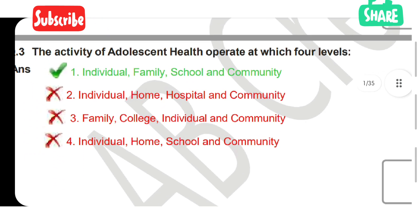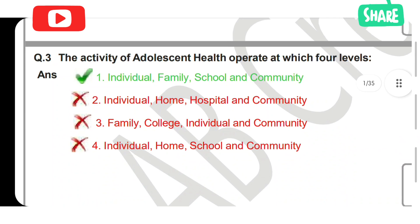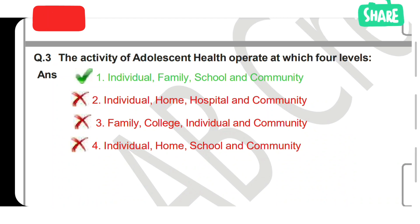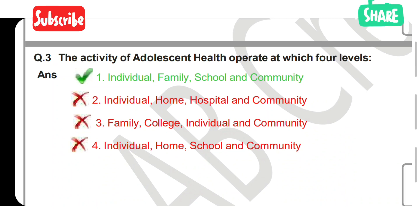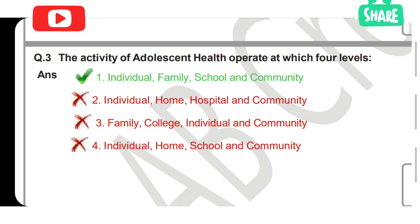Third question: the activities of adolescent health operate at which four levels? Option 1: individual, family, school, and community. Option 2: individual, home, hospital, and community. Option 3: family, college, individual, and community. Option 4: individual, home, school, and community. The correct answer is Option 1 — individual, family, school, and community.